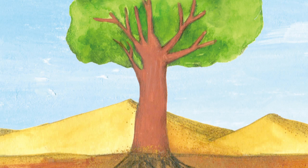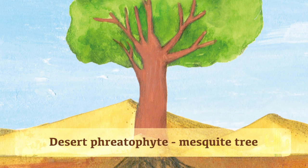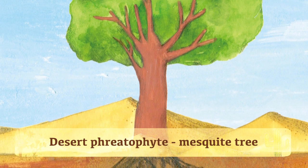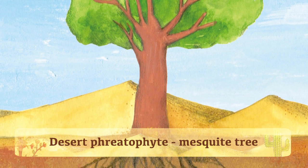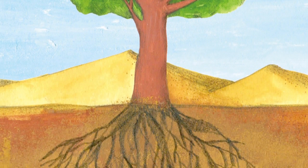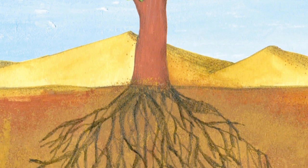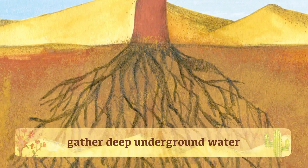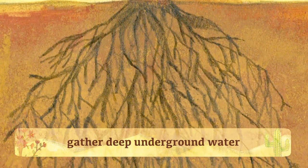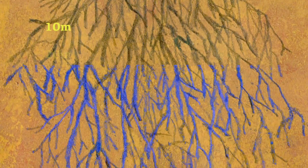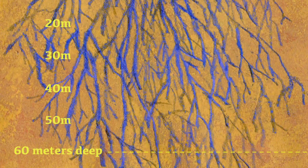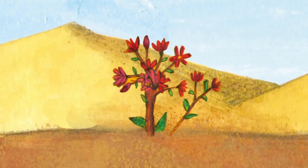Another type of desert plant is the desert phreatophyte. The mesquite tree is an example of a desert phreatophyte. The phreatophyte is able to gather deep underground water using its roots. For example, the roots of the mesquite tree can grow almost 60 meters deep.